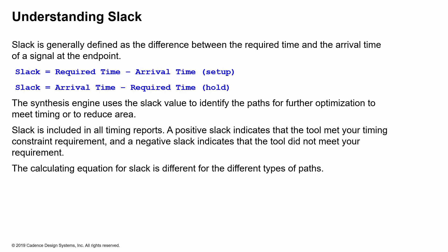Arrival time is calculated from the start point or the launch clock, and the required time is based on the capture clock. The difference between the required time and the arrival time is the slack. If you're meeting timing, your slack is positive; if not, your slack is negative. The slack shown here is for setup. For hold, the slack is arrival time minus required time. Slack values are included in all timing reports, and a negative slack indicates a violation.